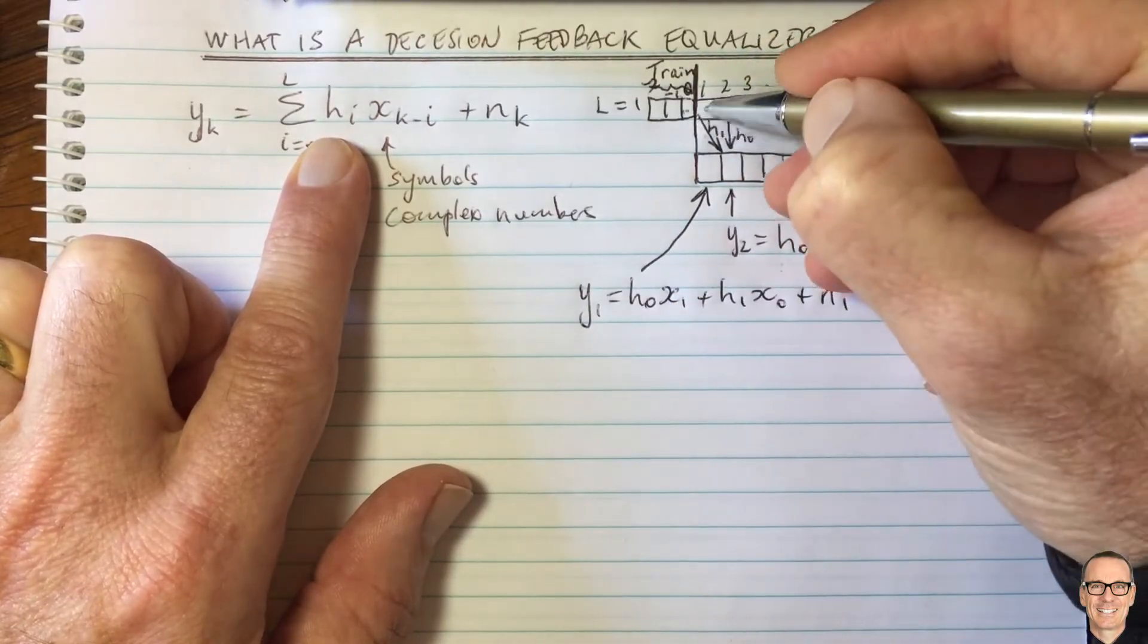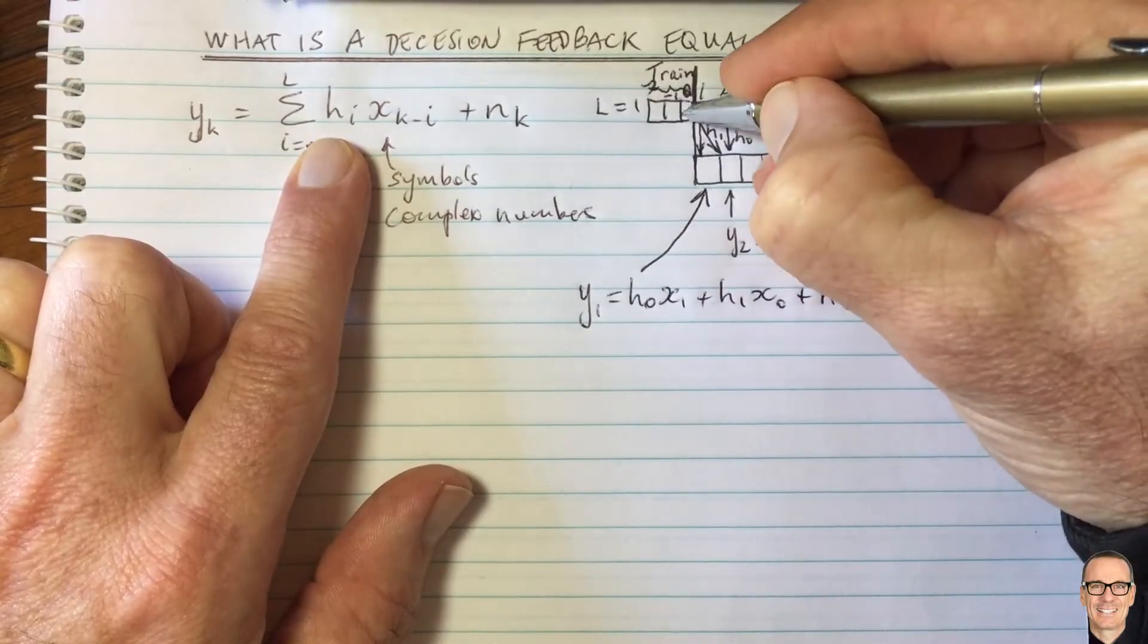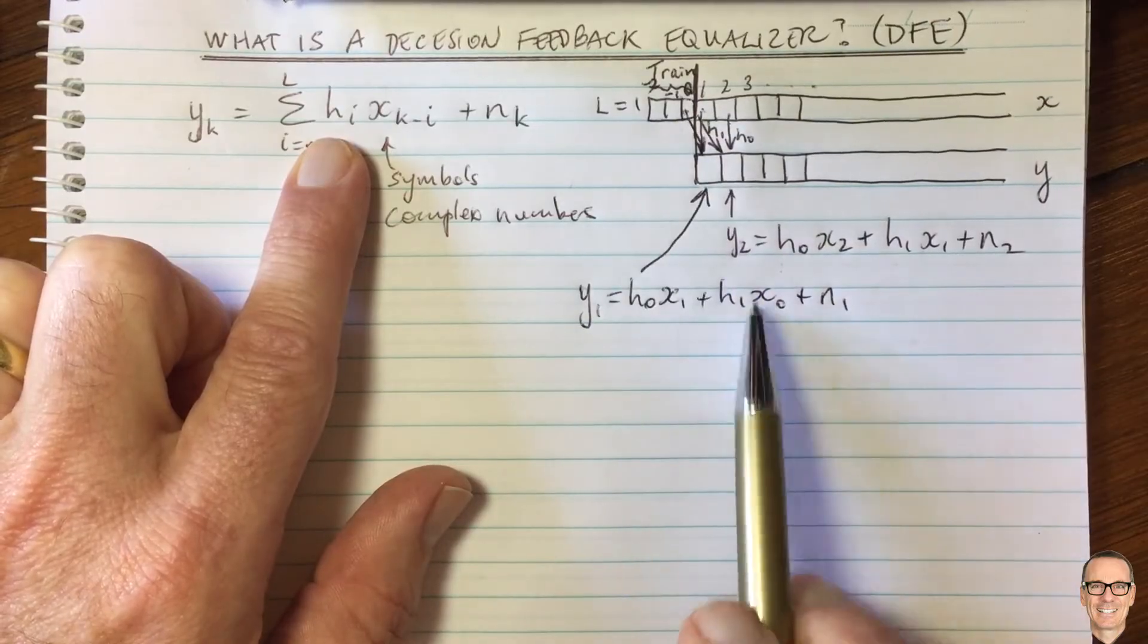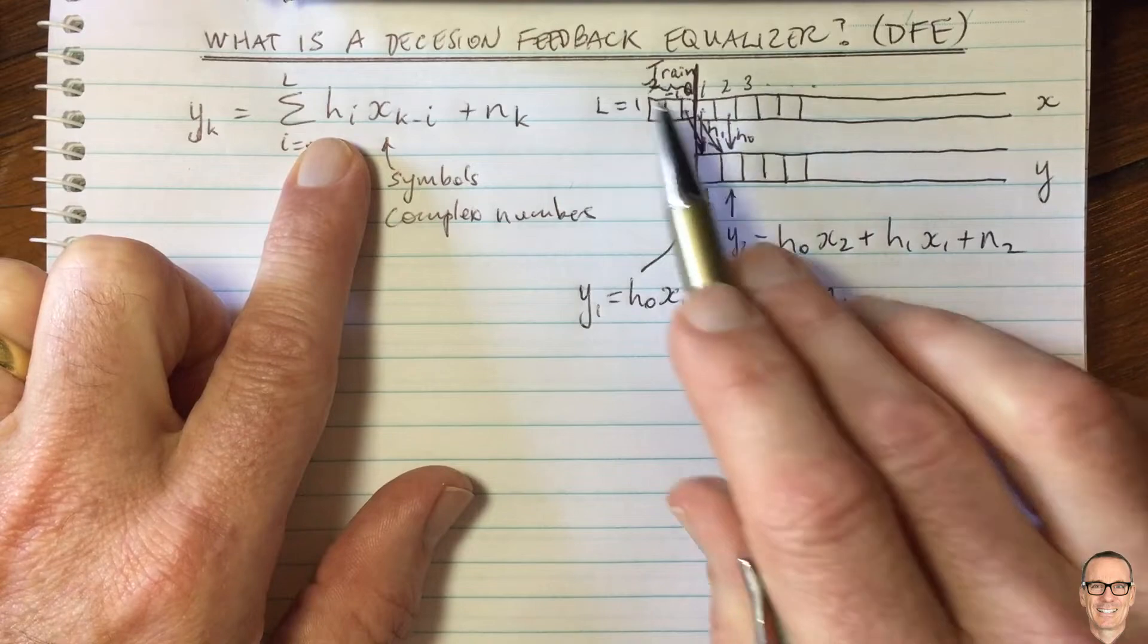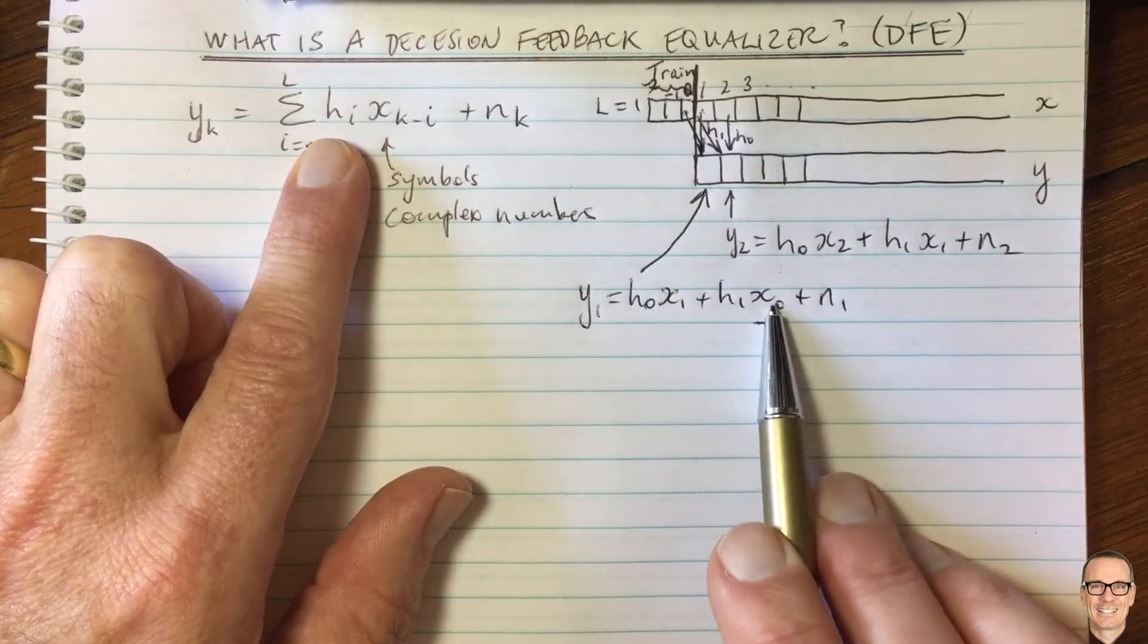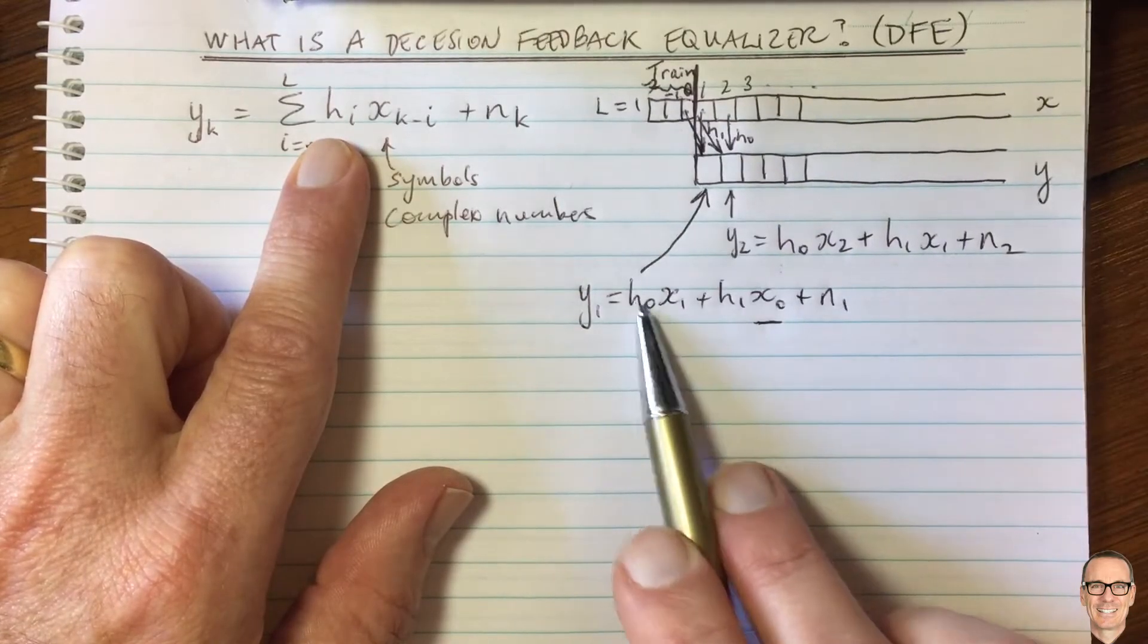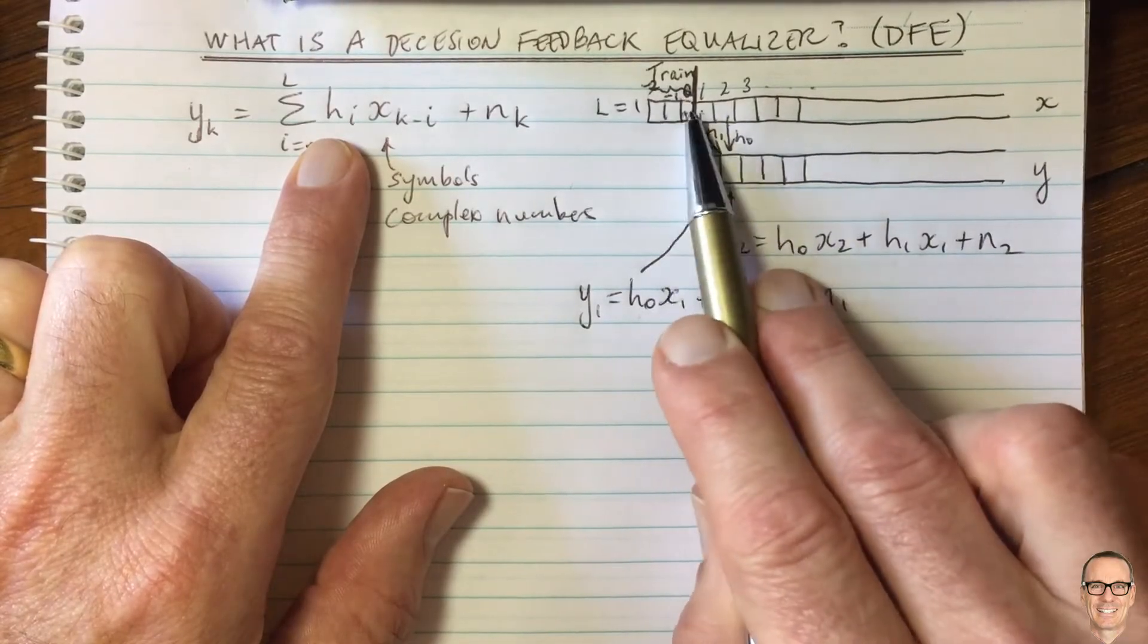And so if we look at our diagrams here, there's the component here from x1, but there's also the carryover component from the previous symbol x naught. Now in this case, we know x naught, we know what x naught is, because it's part of the training data. So for the very first measurement, we know what the inter-symbol interference is. We know this complete thing. If we've used the training to measure and estimate h naught and h1, we know them. And we also know x naught, because it's part of the training symbols.